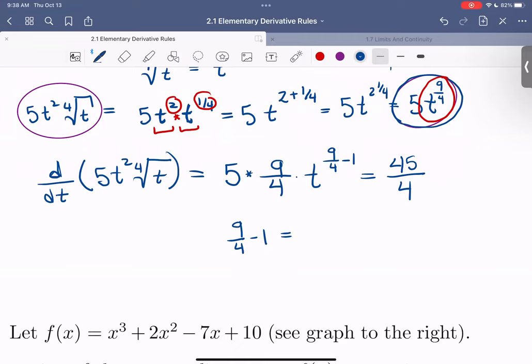9 - 4 gives us 5/4, which is equivalent to 1 and 1/4. But often it's more convenient to leave the exponent as a fraction. So we can write this as t^(5/4).